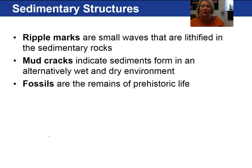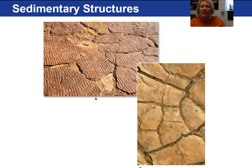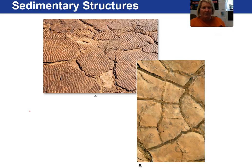Three additional structures include ripple marks — these are small waves that are lithified in the rock. Mud cracks indicate an environment that gets wet and dry. And fossils are sedimentary structures that tell us about depositional environment as well. Picture A shows ripple marks and picture B shows mud cracks.